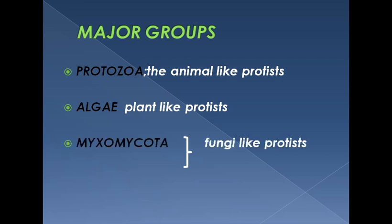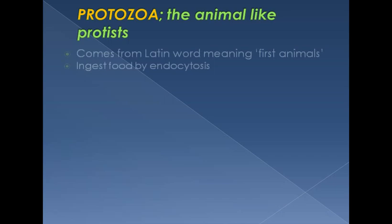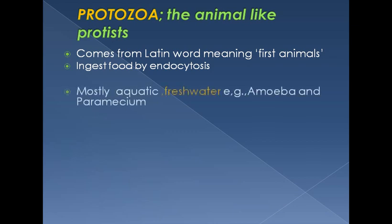The major groups of Protista include animal-like protists (protozoa), plant-like protists (algae), and fungi-like protists, which include two groups: Myxomycota and Oomycota. Animal-like protists are protozoans. As the name indicates, protozoa means 'first animal' — these are the simplest animal-like creatures. They have an ingestive mode of nutrition by endocytosis, which is the ingestion of food by invagination of the plasma membrane.